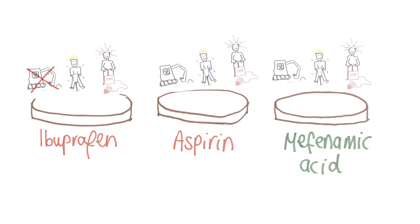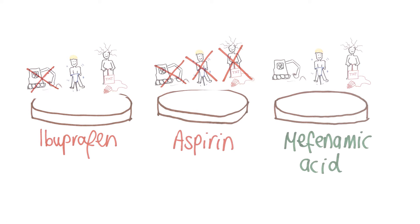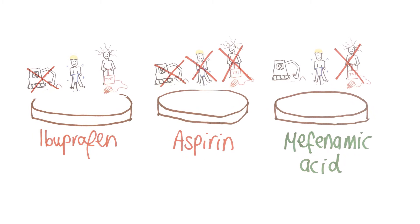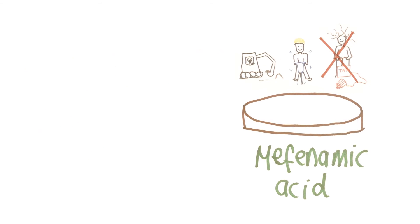To do this, we tested lots of drugs on cells growing in a dish and found one currently used drug called mefenamic acid inhibited the kinds of inflammation we think contribute to Alzheimer's disease.